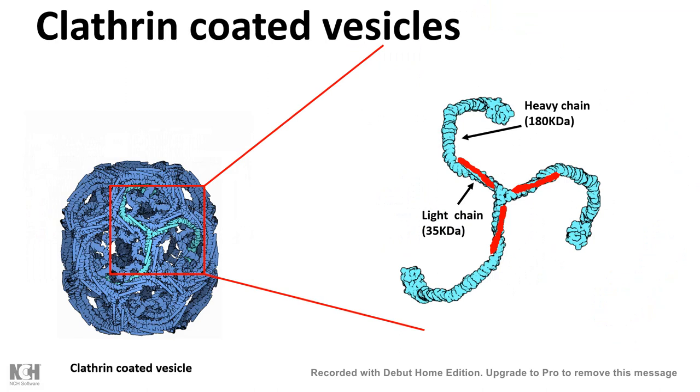It is coated by clathrin, and clathrin is produced by a complicated lattice of triskelion molecules. The triskelion molecules as depicted here have a heavy chain of 180 kD and light chain of 35 kD. And these triskelion residues attach to each other at their head domain and form the complicated clathrin lattice all around the vesicle.